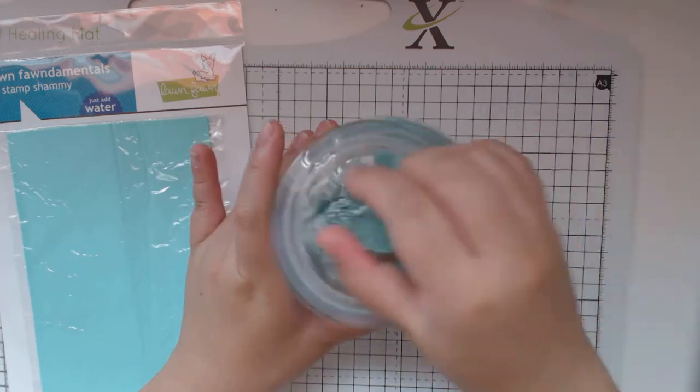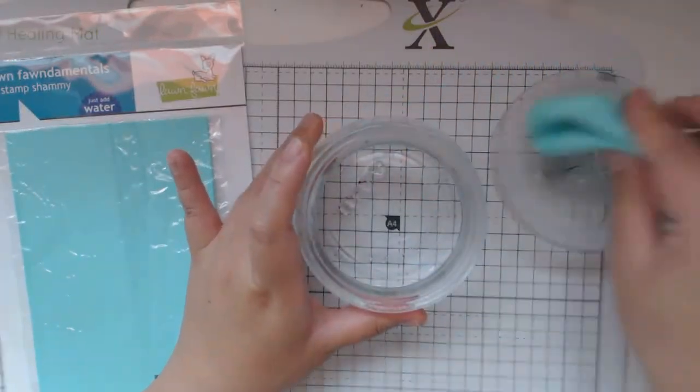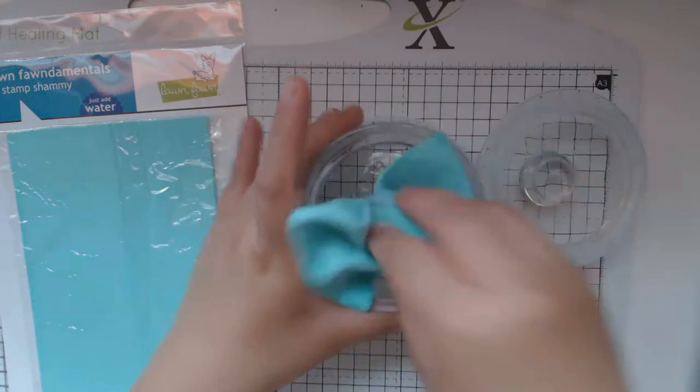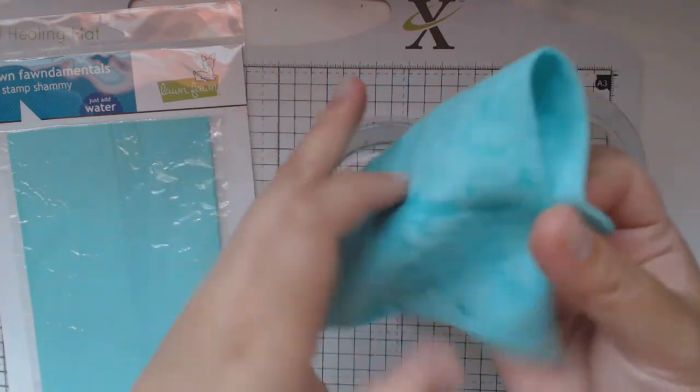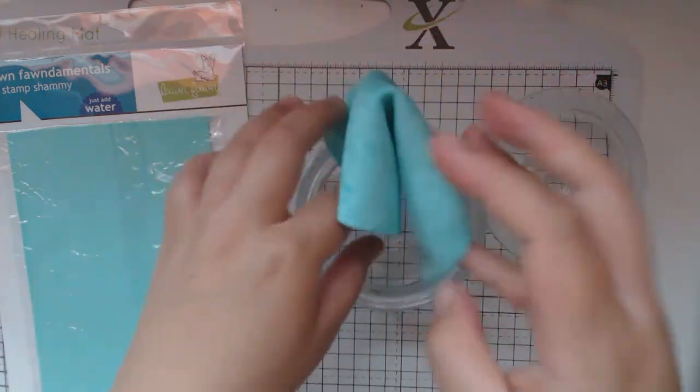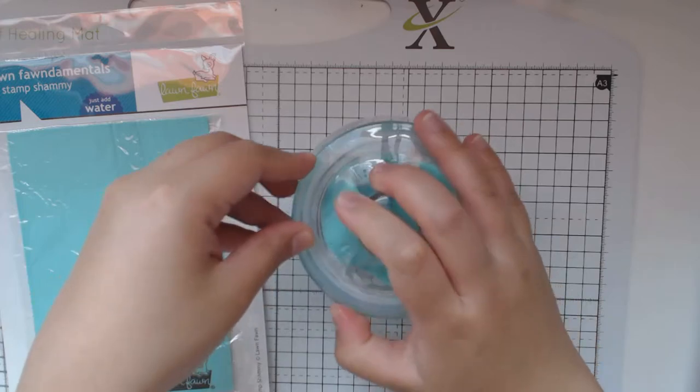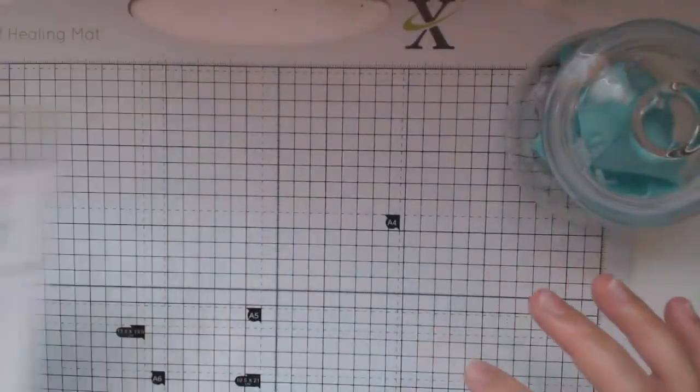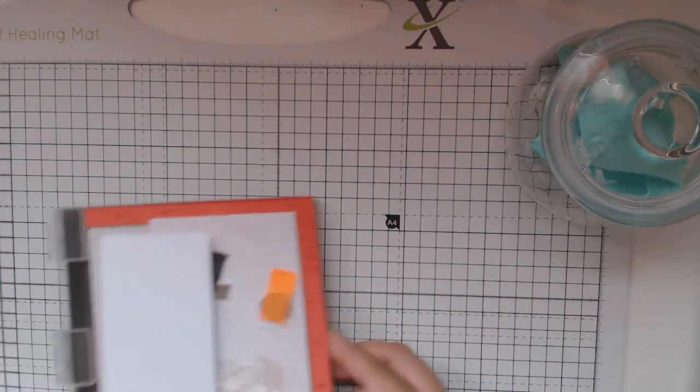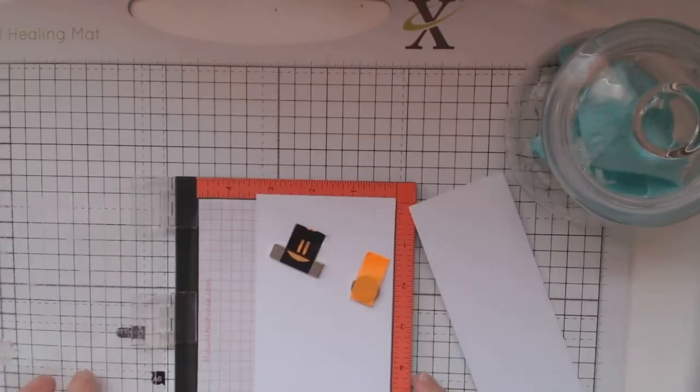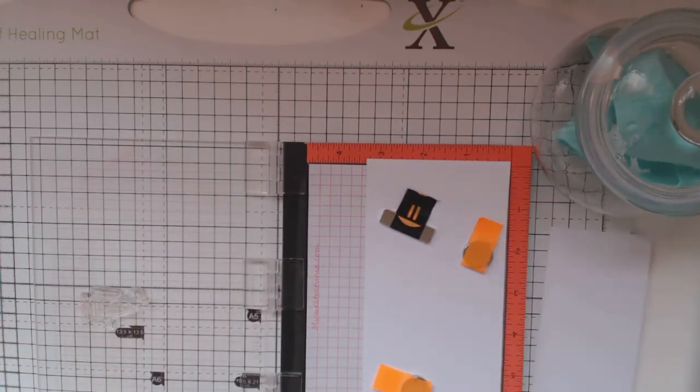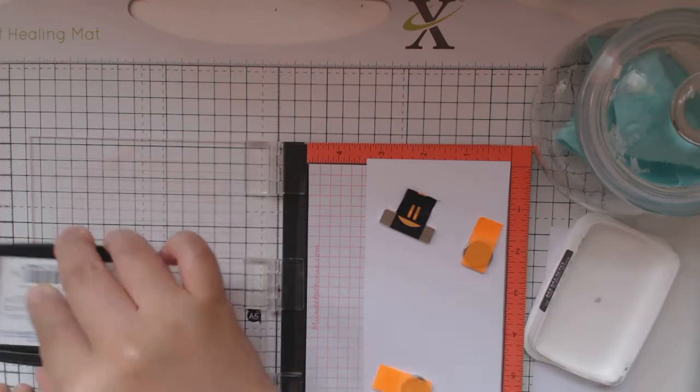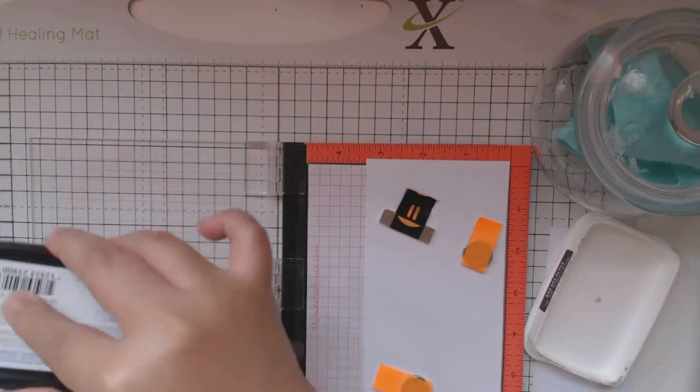Just add a little bit of water to hydrate the cloth. We'll try stamping on paper to demonstrate cleaning. I have the stamp here and we'll add a little bit of water to see if it cleans properly.